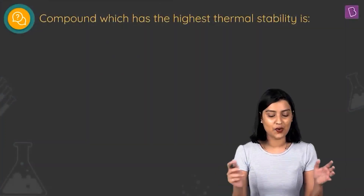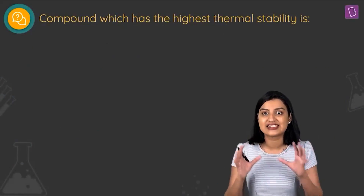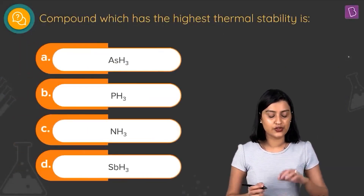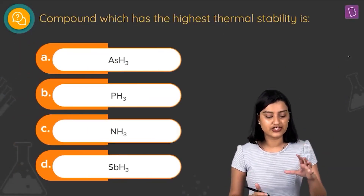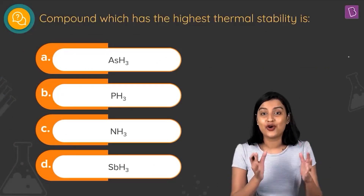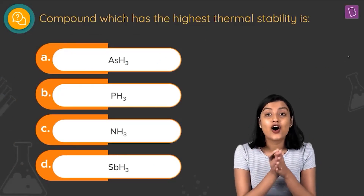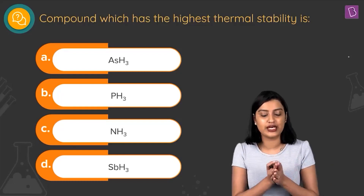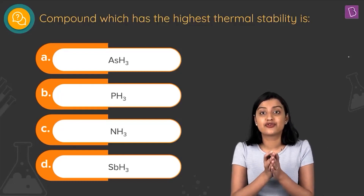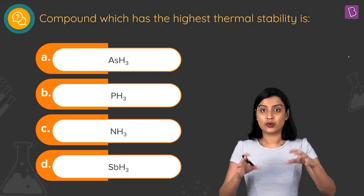They're asking which compound has the highest thermal stability. Let's take a look at the options: ASH3, PH3, NH3, SBH3. These are hydrides of group 15 elements, so we are talking about the thermal stability of group 15 hydrides.